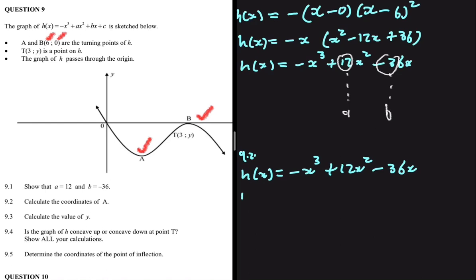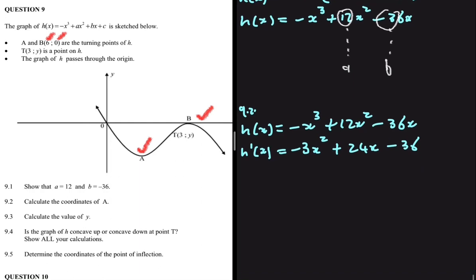The x-values we find are the x-values at the turning points, because that's where the gradient equals zero. Applying the power rule, h'(x) equals minus 3x squared plus 24x minus 36. We equate this to zero to find the turning point x-values.